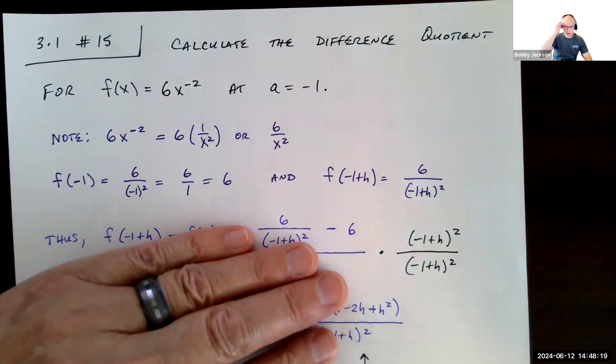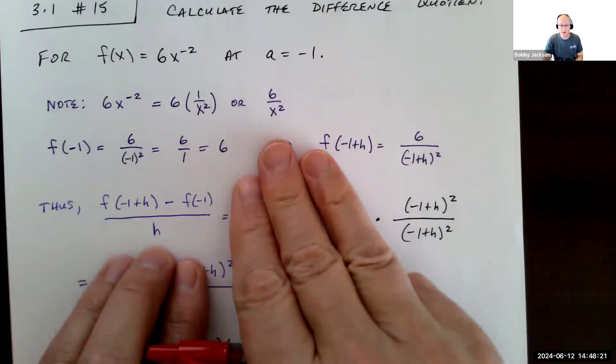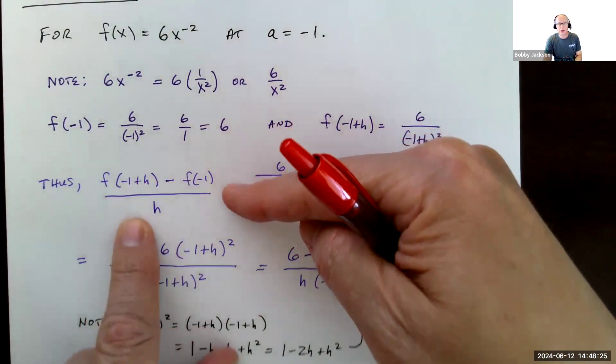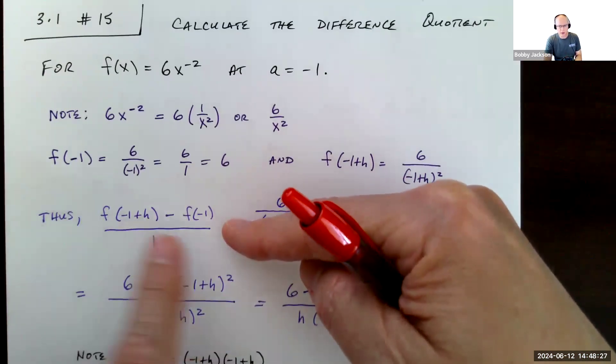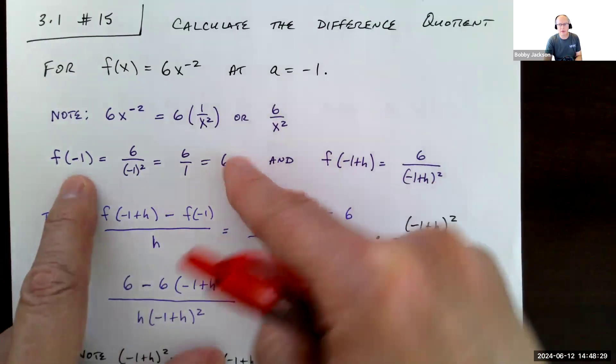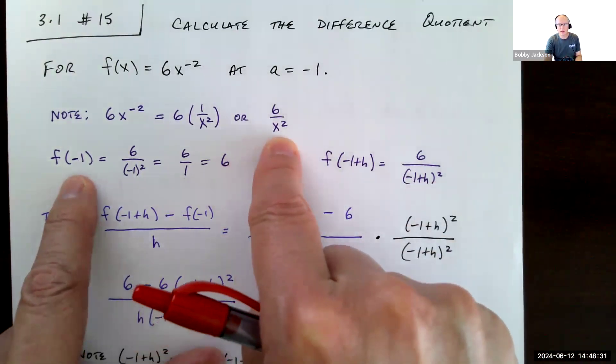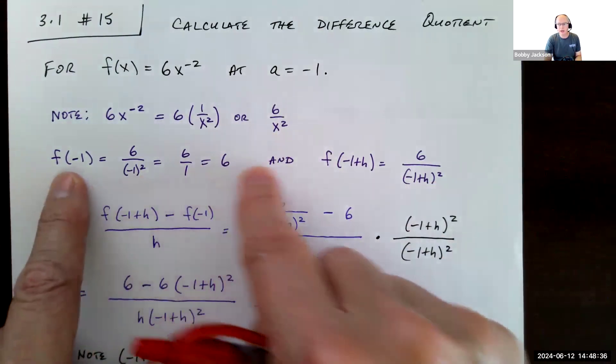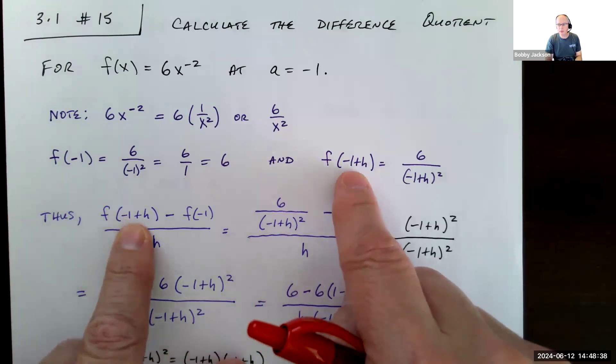So the difference quotient, first of all, this is what they ask us to find right here. This is the difference quotient. And so we need f of negative 1. If I plug in negative 1 into x, I get 6 divided by negative 1 squared is 6 divided by 1 is just 6.